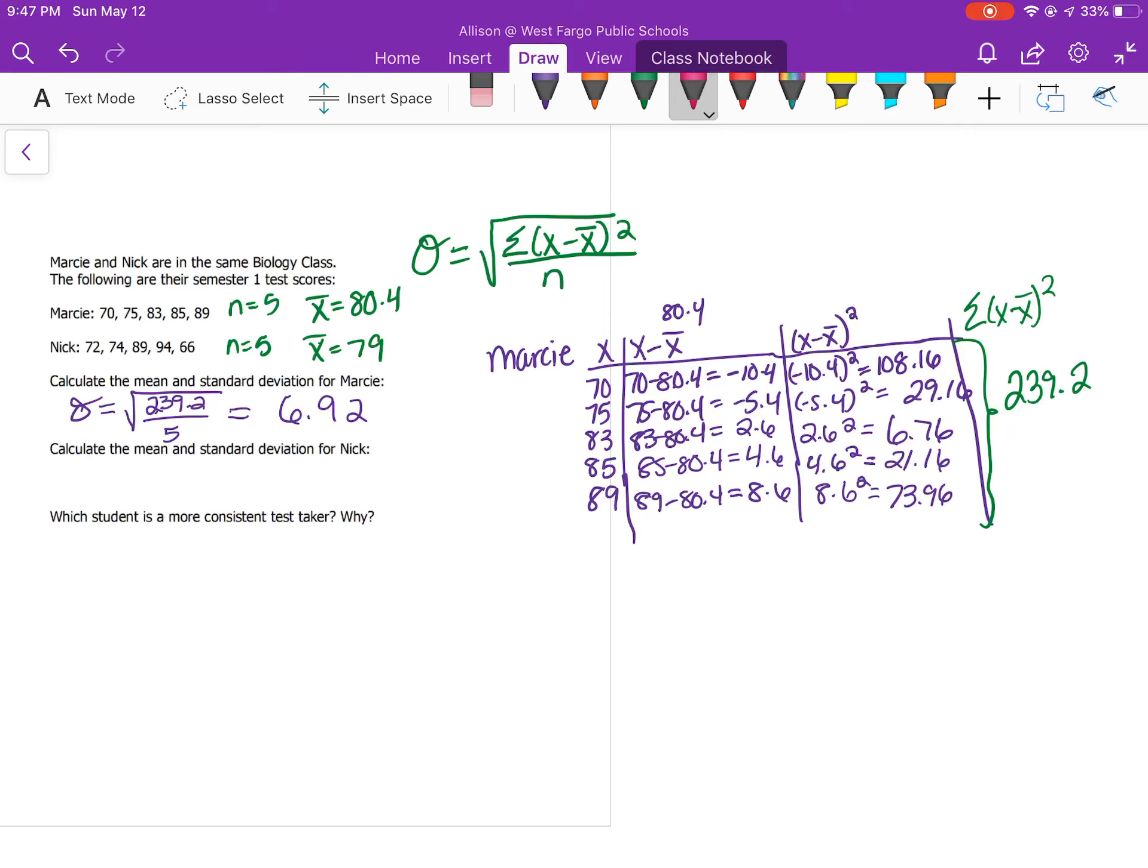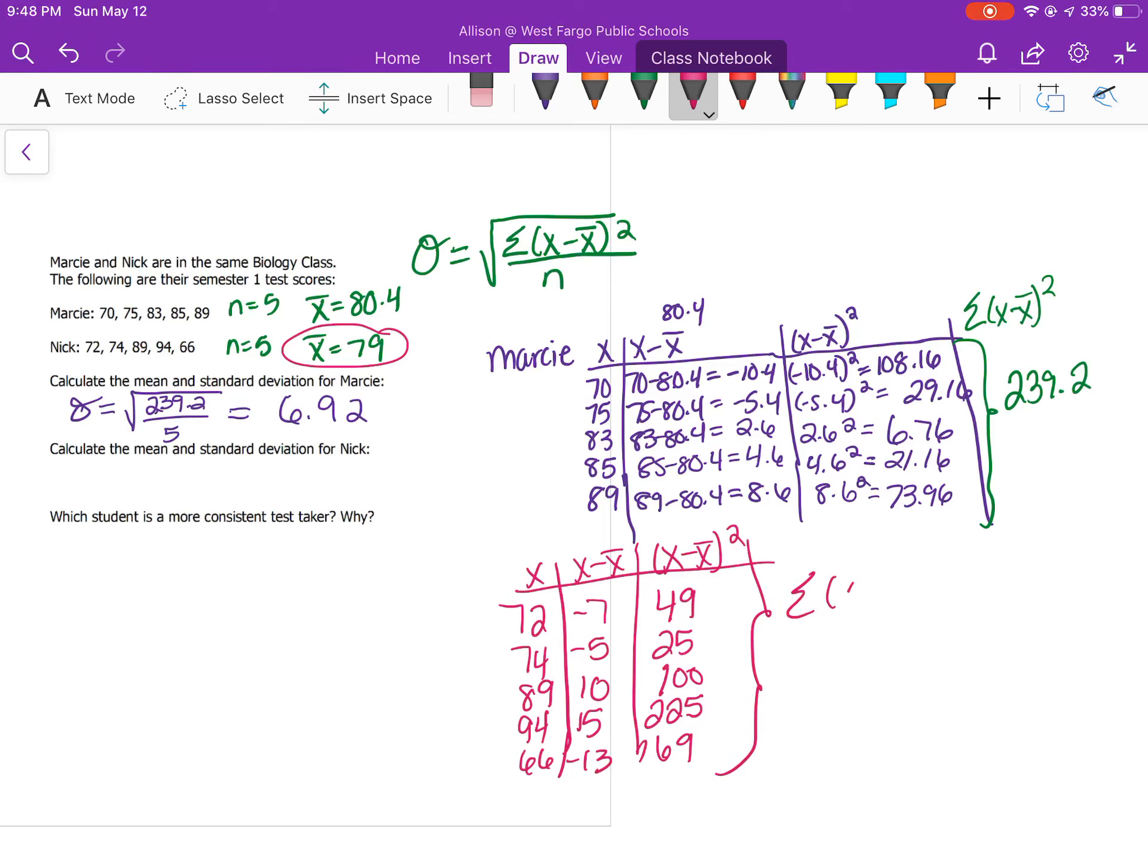We do the same thing for Nick. Nick's test scores are 72, 74, 89, 94, and 66. You do x minus his average, 79. 72 minus 79 was negative 7. Then square those values, so 49. 74 minus 79 is negative 5. Then 10, then 15, then negative 13. Remember, when you square a number it's always positive. So I got 25, 100, 15 squared is 225, and 13 squared is 169. I find the sum, and I got 568. The standard deviation is the square root of 568 divided by 5. I got 10.66.